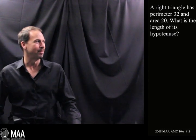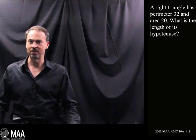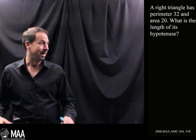Here's a great little geometry problem for grade 10 which goes as follows. A right triangle has perimeter 32 and area 20. What is the length of its hypotenuse? Actually sounds pretty innocent.